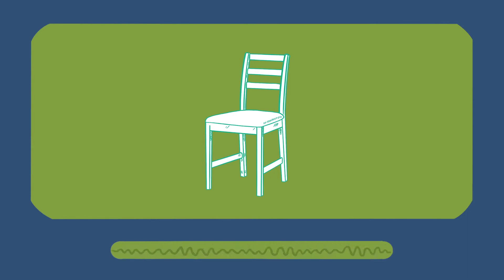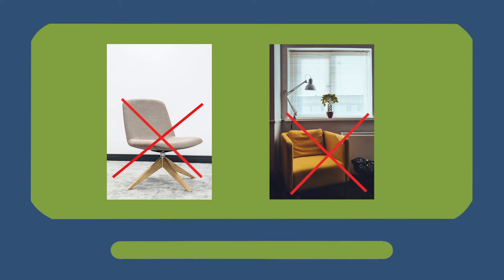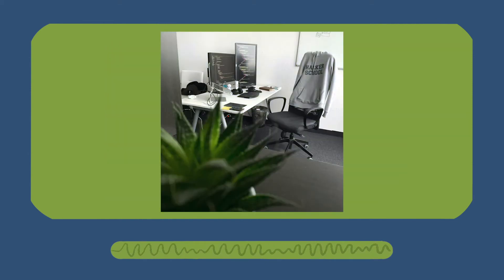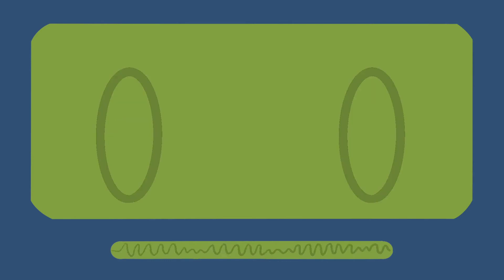The computer then breaks down the chair into its defining characteristics — it has a back, a seat, and four legs. The system can now identify chairs, but only those that look very similar to that one example. So when it sees a desk chair with arms and wheels, it cannot identify it. We then tell the computer that the desk chair is also a chair, and now it is better able to identify chairs in any picture.